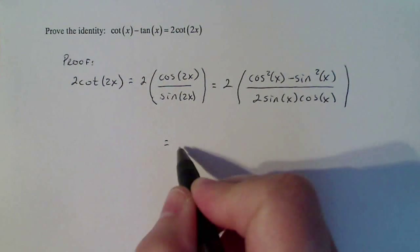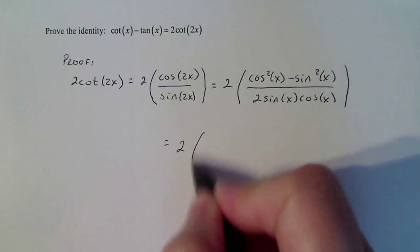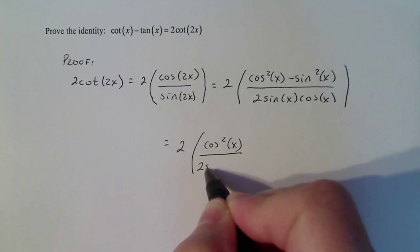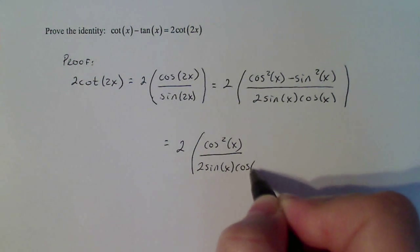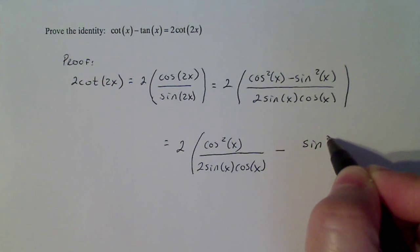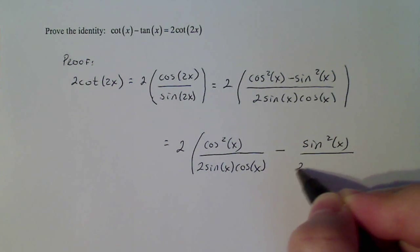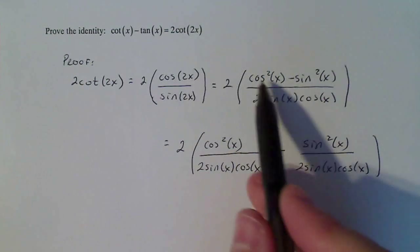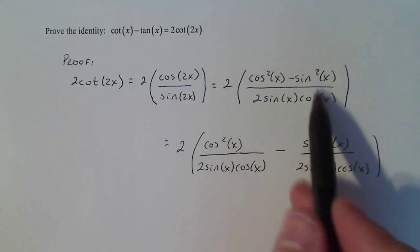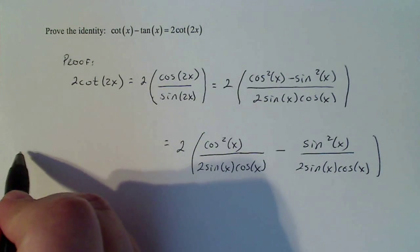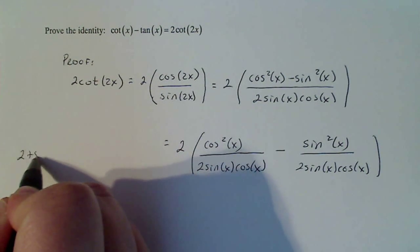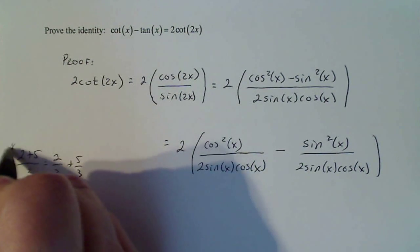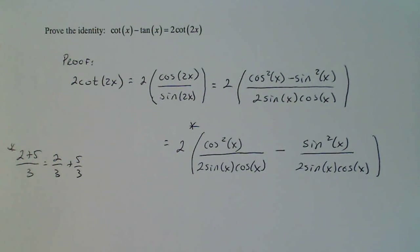I can rewrite this as cosine squared x divided by 2 sine x cosine x minus sine squared x divided by 2 sine x cosine x. All I did is I took the difference and put the denominator under each. It's kind of like when you're doing arithmetic: you can write 2 plus 5 over 3 as 2 over 3 plus 5 over 3. That's exactly what I used to write this term right here. If it's legal here, it's legal here.